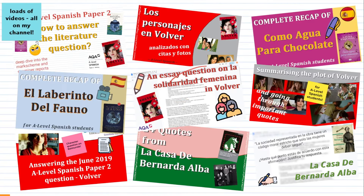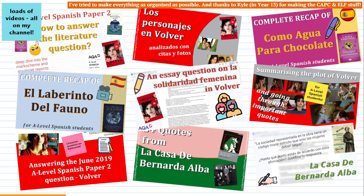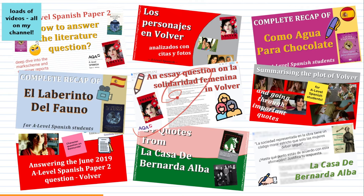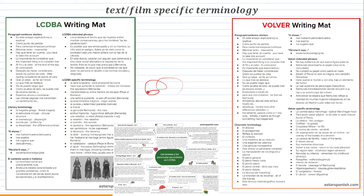Before I continue, I've got loads of Paper 2 videos on my channel covering the four most popular texts and films: La Casa, Volver, El Laberinto del Fauno, and Como Agua para Chocolate. These videos are all in playlists which you can find on the homepage or linked in the description. And I've got a page on my website for each text, for example aceslotspanish.com/lcdba for La Casa de Bernarda Alba.